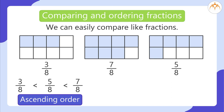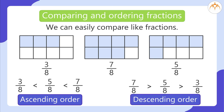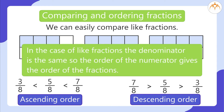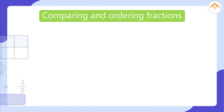We write these fractions in descending order as 7/8 > 5/8 > 3/8, from greatest to smallest. In the case of like fractions, the denominator is the same, so the order of the numerator gives the order of the fractions.